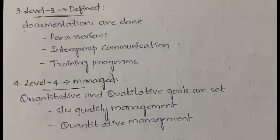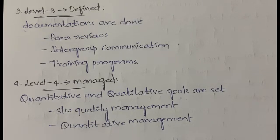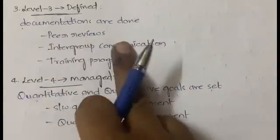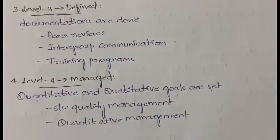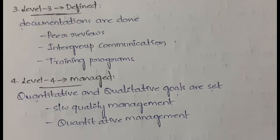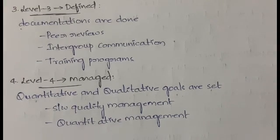Level 3 is Defined. Here, all documentation related to the project is done — soft copy, hard copy, reviews, whatever is needed. Peer reviews are conducted, intergroup communications take place where one department communicates with another, feedback and reviews are written, and training programs are conducted.